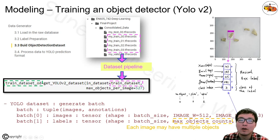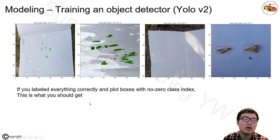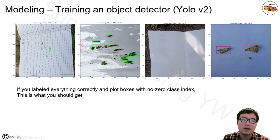The label has five dimensions. The first four (indices 0–3) are the resized box coordinates indicating where the box is located. The fifth dimension indicates the class index — in the YOLO label format, zero is reserved for no-object, one is Pink Ball Worm (PBW), and two is American Ball Worm (ABW). After correctly labeling everything and plotting boxes with non-zero class indices, it shows the image with each box at the correct location.